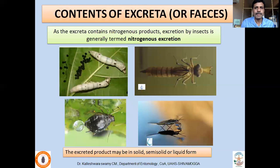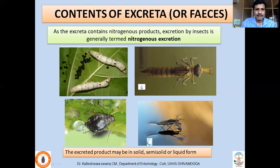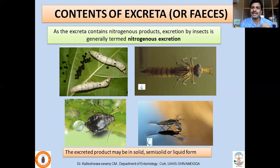The excreta of insects contain nitrogenous products; excretion by insects is generally termed nitrogenous excretion. Insects may eliminate excreta in the form of pellets or liquid. Many terrestrial insects eliminate excreta as an almost semi-solid substance, or it may be in liquid form where the nitrogenous excreta is mixed with water and eliminated out of the body.